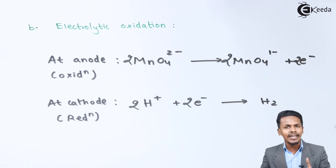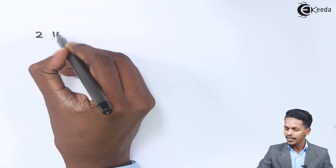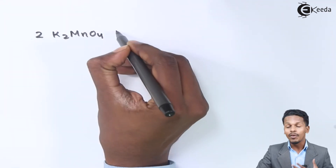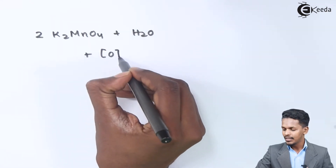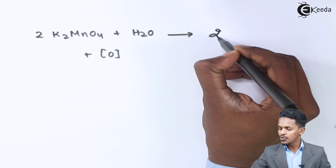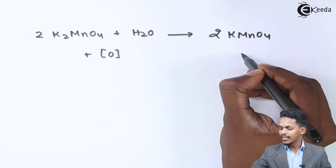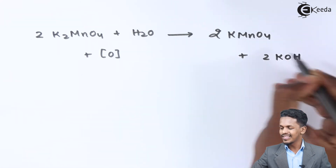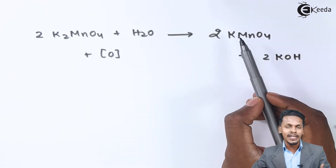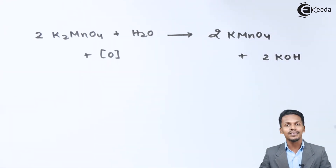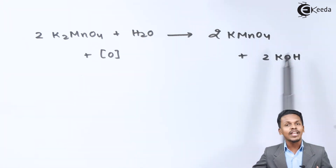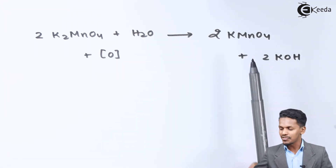The overall reaction in electrolytic oxidation is: two moles of K2MnO4 reacted with water gives two moles of KMnO4 along with two moles of KOH. This KMnO4 is obtained as pure dark purple crystals. That is how we can obtain pure and dark purple crystals of KMnO4 through electrolytic oxidation.